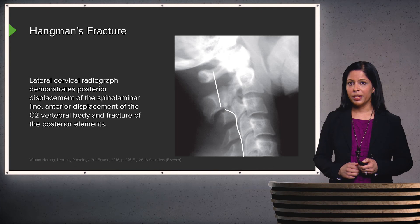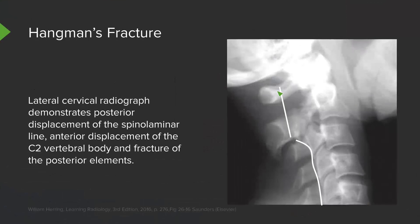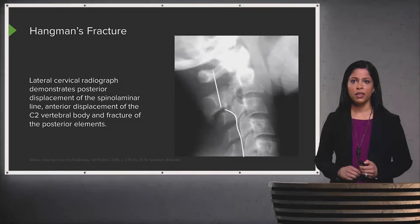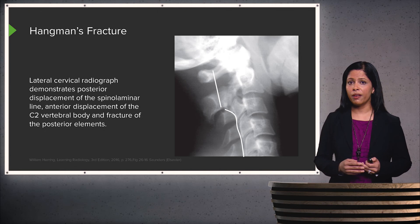This is an example of a hangman's fracture on a lateral cervical radiograph, demonstrating posterior displacement of the spinal laminar line. The line should remain symmetric all the way up and down, but here there is posterior displacement followed by anterior movement. There is also anterior displacement of the C2 vertebral body and fracture of the posterior elements of C2. These common spinal fractures are very important to recognize because they may have chronic neurological deficits associated with them.